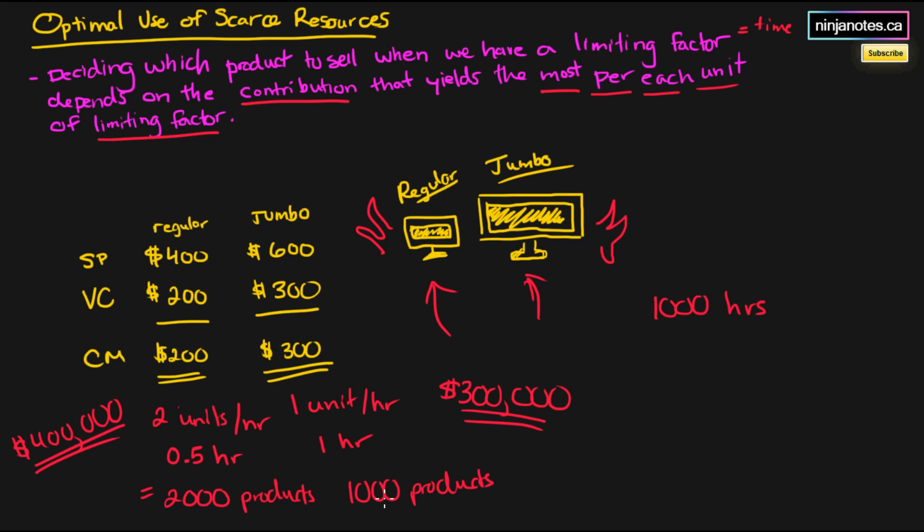You get that from multiplying 1,000 times 300, and 2,000 times 200. This shows us that we should go with the regular TV product line, because we are making more contribution margin per unit of limiting factor in the case of the regular TV.